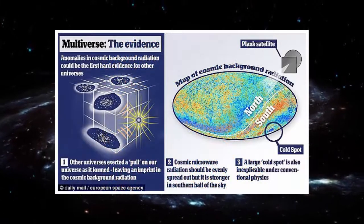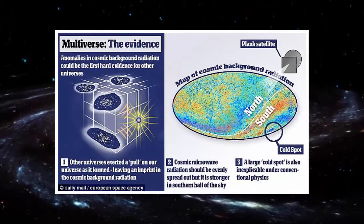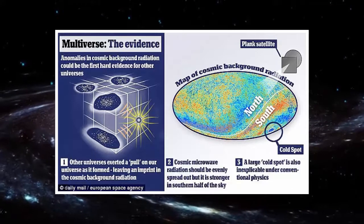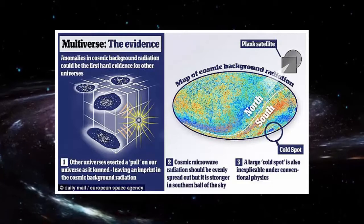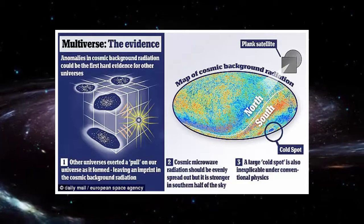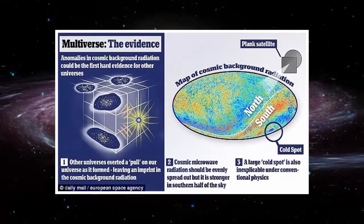This opens the origin of the cold spot to more peculiar explanations, with one being that it is proof of the multiverse. We can't entirely rule out that the spot is caused by an unlikely fluctuation explained by the standard model of particle physics, said study co-author Professor Tom Shanks, an astronomer at Durham University.